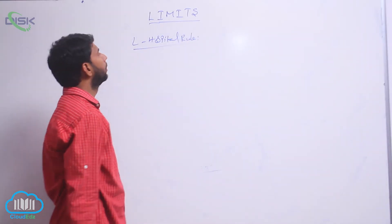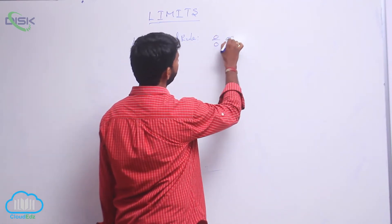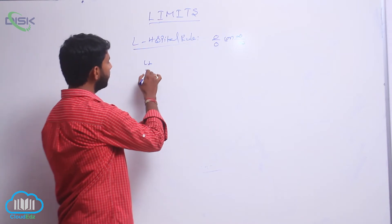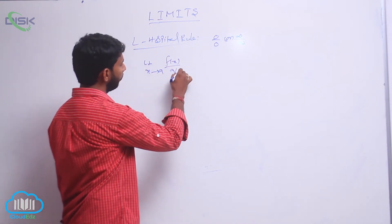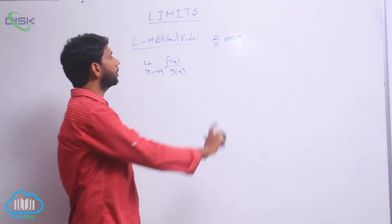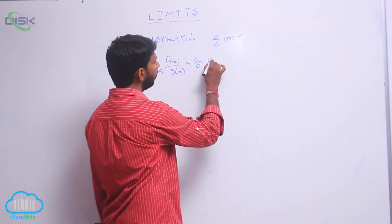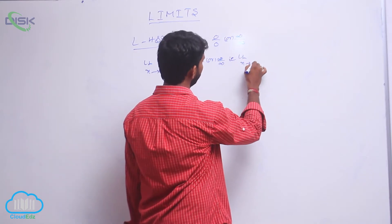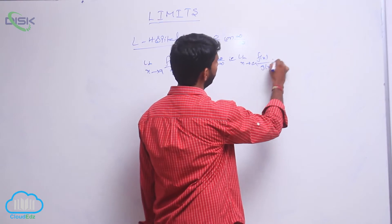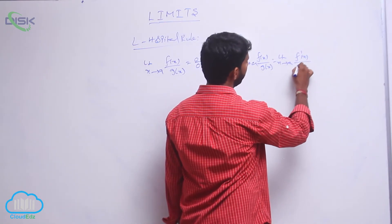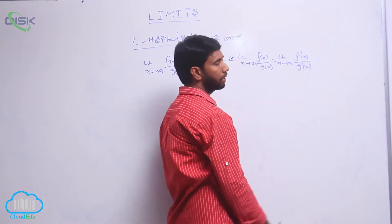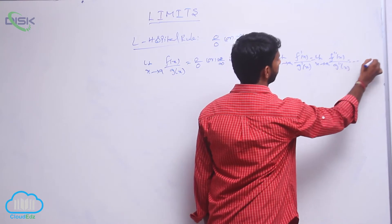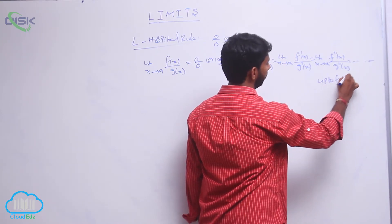Next, L'Hôpital's Rule. L'Hôpital's Rule is applied only for 0/0 or ∞/∞ forms. If after substituting the limit, f(x)/g(x) gives 0/0 or ∞/∞, apply L'Hôpital's Rule: limit extends to a of f(x)/g(x) = limit extends to a of f'(x)/g'(x), repeated up to a finite value.